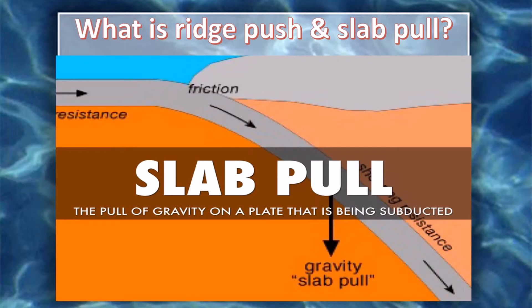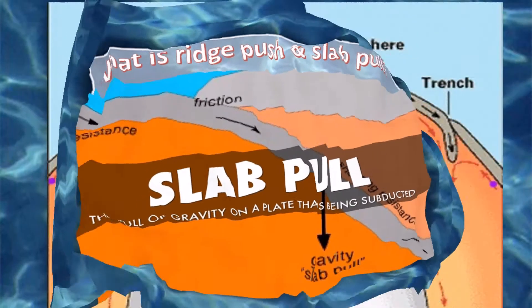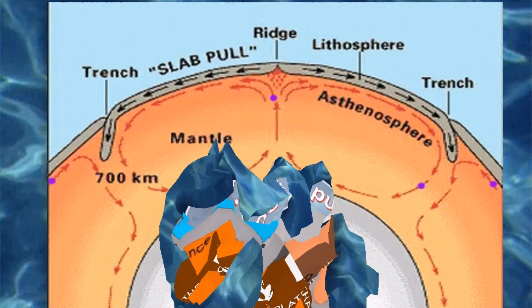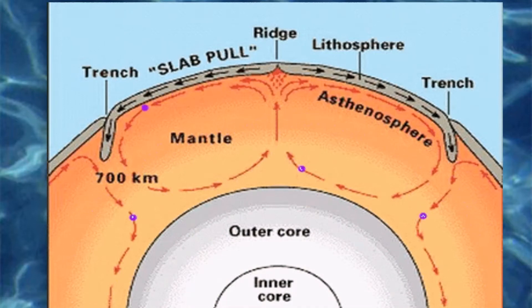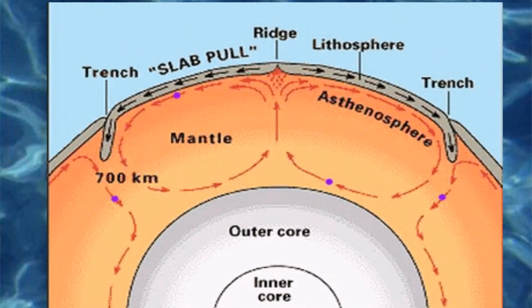Note that as the lithosphere slides down away from the ridge, tensional forces and normal fault earthquakes occur at the ridge axis where two plates are sliding apart. Slab pull occurs where gravity pulls the edge of a cool, dense plate into the asthenosphere. Because plates are rigid, the entire plate is dragged along.